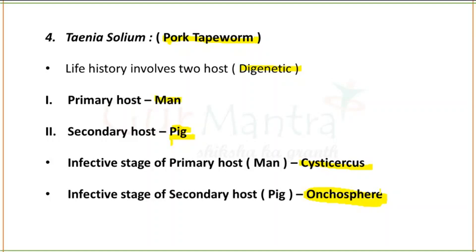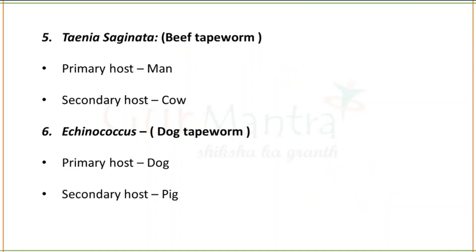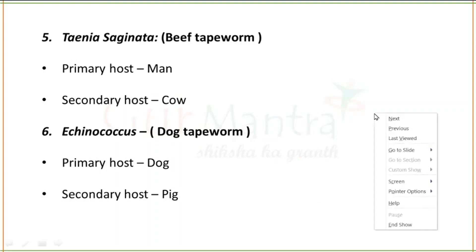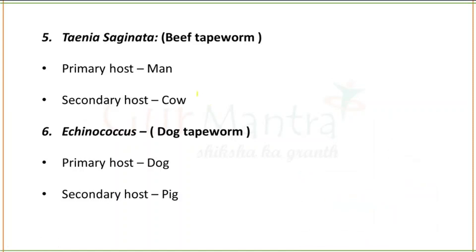Fifth is Taenia saginata — the beef tapeworm. Primary host is man; secondary host is cow. Sixth is Echinococcus — the dog tapeworm. Its secondary host is pig.